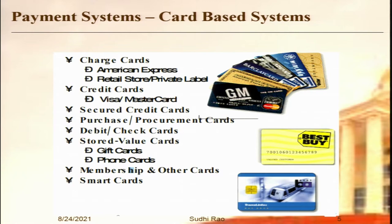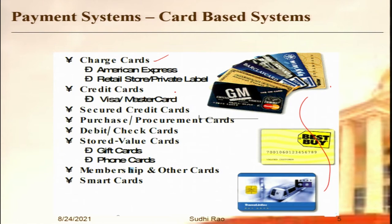There are various types of cards — credit and debit are only two types. Cards can be classified into charge cards — the best example is American Express, especially popular in the corporate world among affluent people. They are not actually credit cards, they are called charge cards. Then there are retail store cards or private label cards — cards issued by a particular company valid only in that company. For example, a Big Bazaar card could only be used in Big Bazaar.